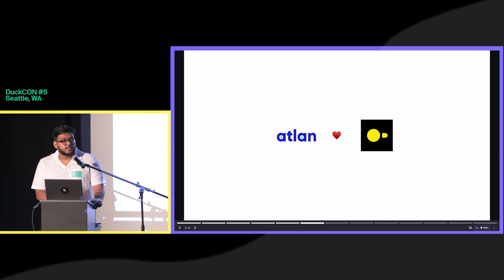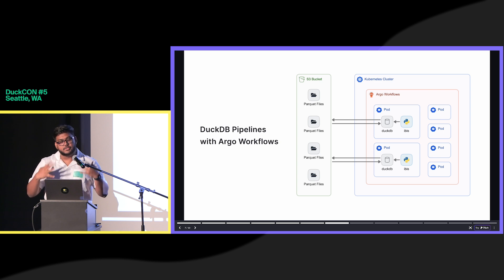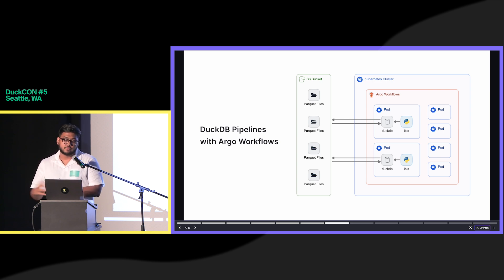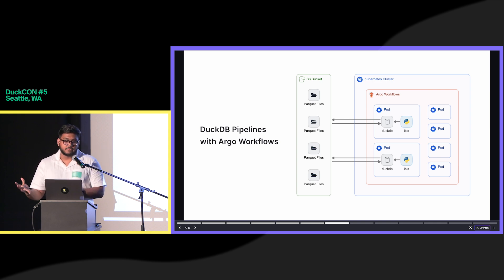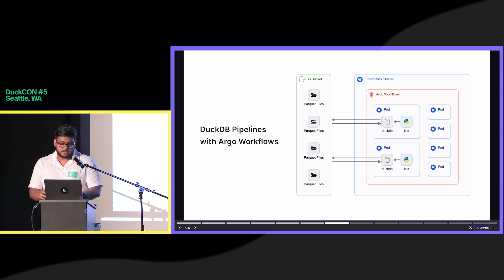Atlan loves DuckDB — we use it across almost all of our pipelines in some capacity to run analytical workloads. These pipelines have an architecture where you have a pipeline which is a DAG of pods, and in each pod we run an embedded instance of DuckDB which constantly queries the S3 bucket to fetch Parquet files. We make full use of the predicate pushdown feature so that only the required columns are pulled in, and then these pods keep running the analytical workloads and pushing data back to S3, which are picked up by the later steps.